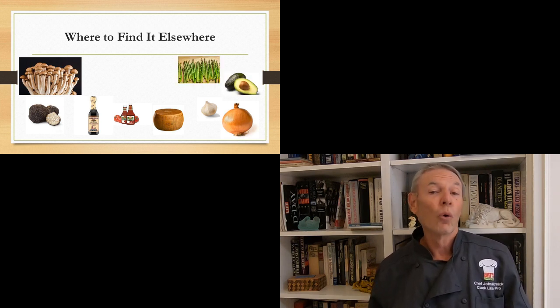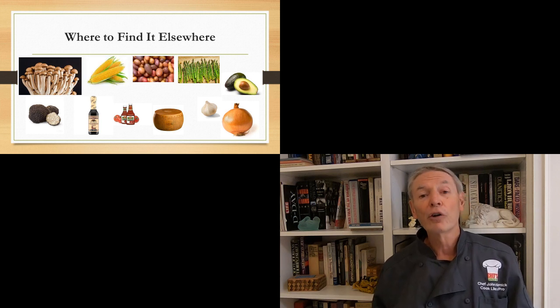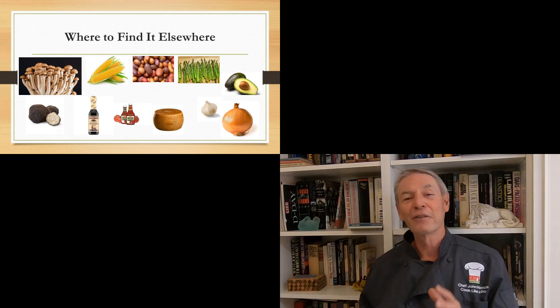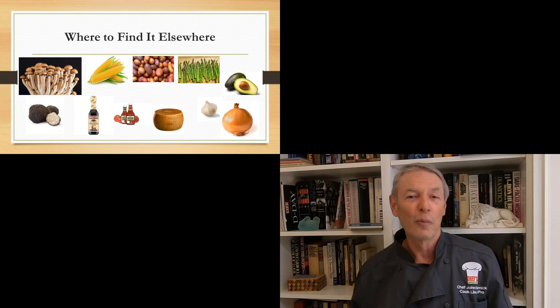And also, green things, like asparagus or avocado. And also starchy things, like corn and potatoes. And if you look at these things on the screen, you'll see this is virtually everything we eat. And they're loaded with umami.